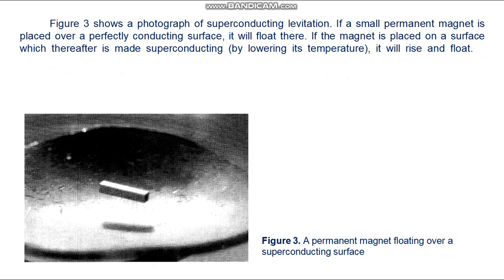Figure 3 shows a photograph of superconducting levitation. If a small permanent magnet is placed over a perfectly conducting surface, it will float there. If the magnet is placed on the surface which is then made superconducting by lowering its temperature, it will rise and float. A repulsive force large enough to overcome the weight of the magnet exists between the magnet and the diamagnetic superconductor, because the superconducting body excludes the magnetic lines of flux associated with the magnet.